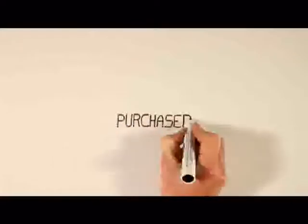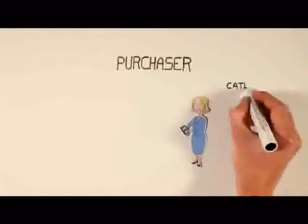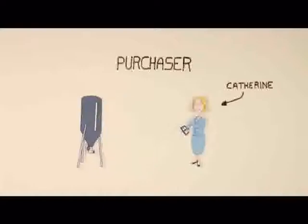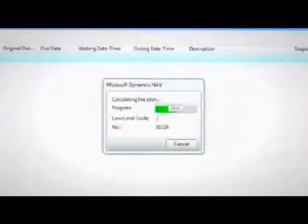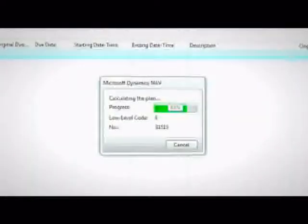Catherine is the purchaser. She's responsible for the availability of the packaging and raw materials, and negotiates prices and delivery terms with the suppliers. Every day, Catherine runs the MRP to detect packaging and raw material shortages. The update of Philip's upcoming production plan will challenge the stock levels. Based on the new requirements and minimum stock quantities, the system will suggest purchase orders in the requisition worksheet. Catherine issues the purchase orders automatically after accepting the proposal.